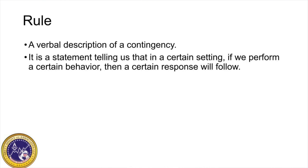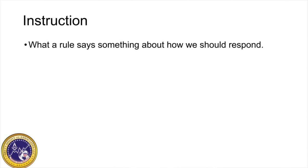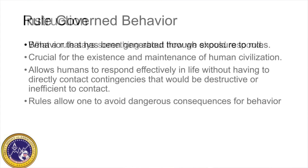A rule is a verbal description of a contingency. It's a statement telling us that in a certain setting, if we perform a certain behavior, a certain response will follow. An instruction is what a rule says will happen and how we should respond to it.